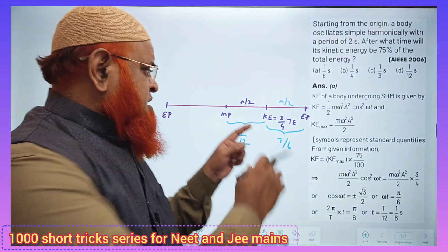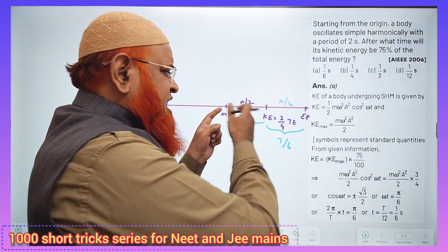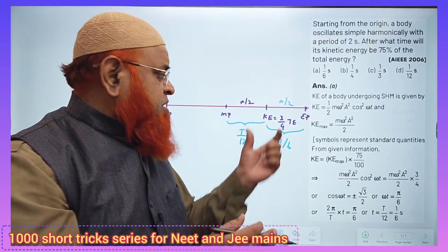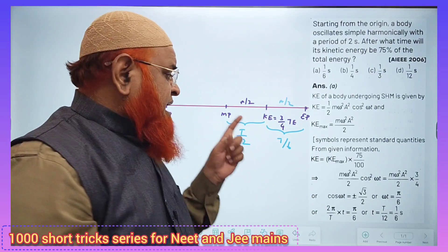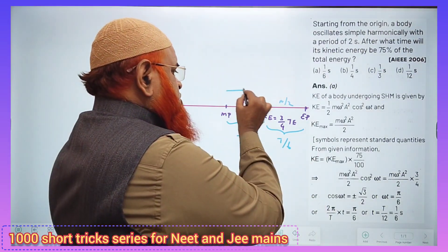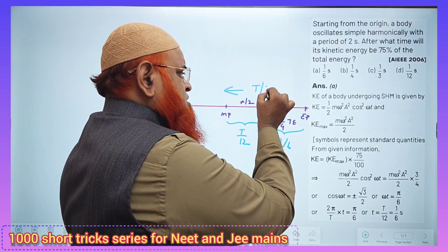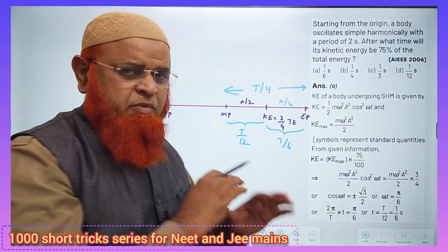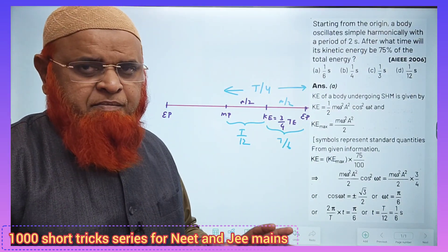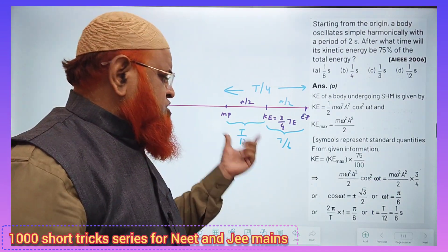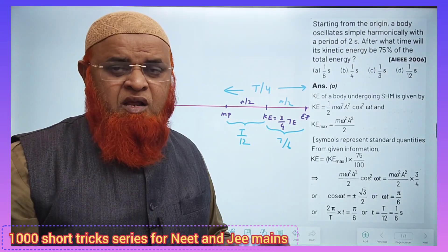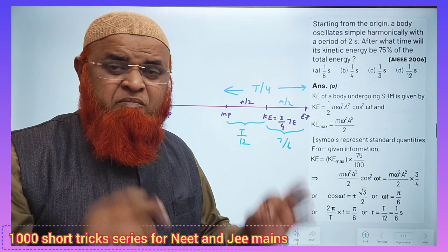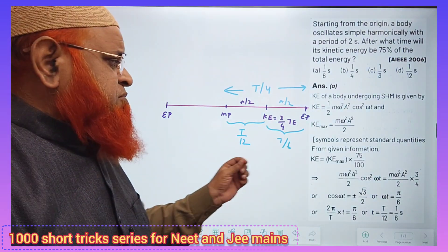From mean position to exactly half of the amplitude, kinetic energy becomes three-fourths of the total energy. Time taken from mean position to extreme position is one-fourth of the time period, but from mean to a/2 it is T/12. It is well known. If you know this after doing many problems, you can solve the problem without any solving.